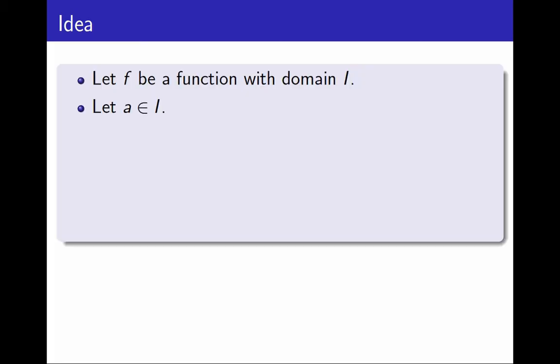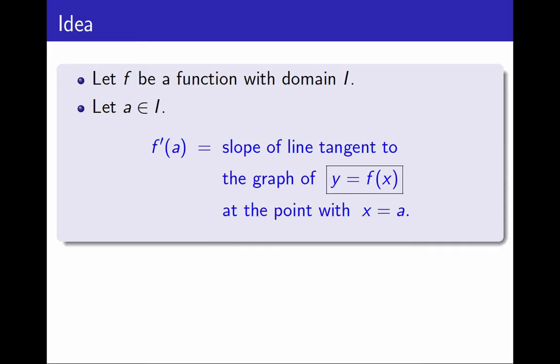To begin, I will try to define derivative with a simple geometric idea. Consider a function f and a number a on its domain. I want to call f prime of a the slope of the line tangent to the graph of f at the point with x-coordinate a. And this number, f prime of a, is what I want to call the derivative of f at a.